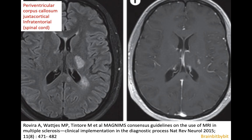The typical locations for multiple sclerosis are periventricular, corpus callosum, juxtacortical, infratentorial, and in the spinal cord. I'm not going to show spinal cord lesions because this is Brain Bit by Bit.